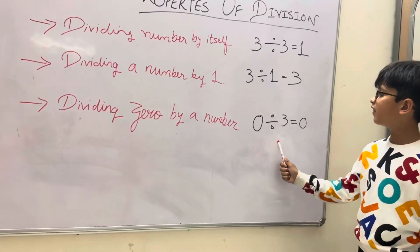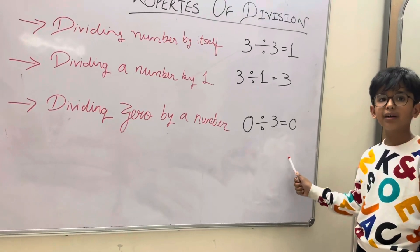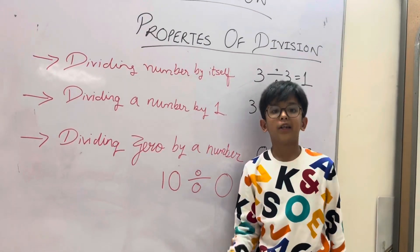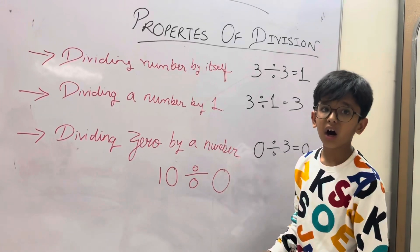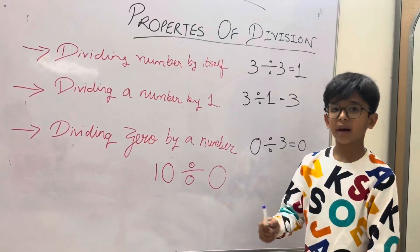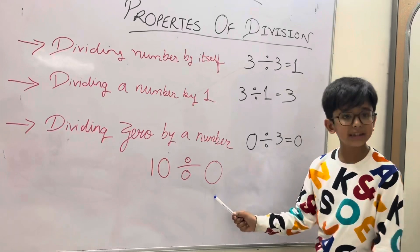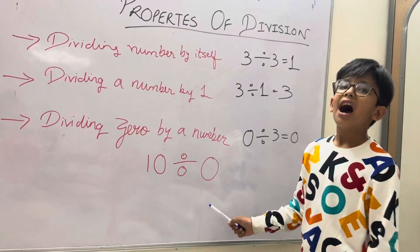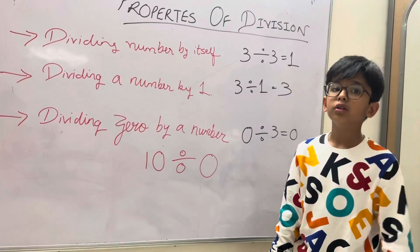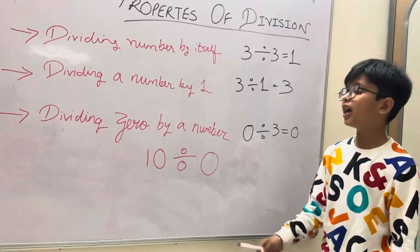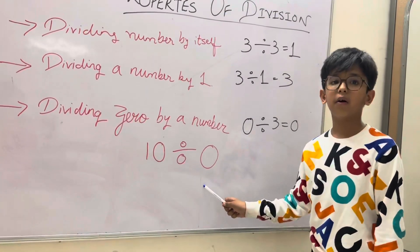Note: 0 as a divisor. Example, 10 divided by 0 has no meaning, so we cannot divide any number with 0.